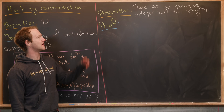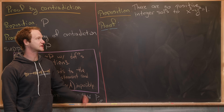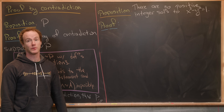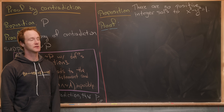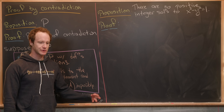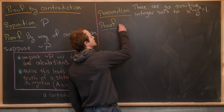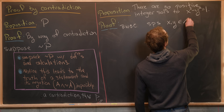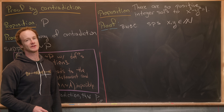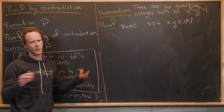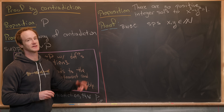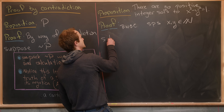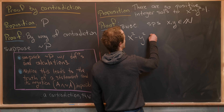For our next proposition, we're going to prove that there are no positive integer solutions to x squared minus y squared equals one. By 'positive integer solutions,' x and y are both positive integers — I'm not including zero. By way of contradiction, suppose x and y are natural numbers such that x squared minus y squared equals one.